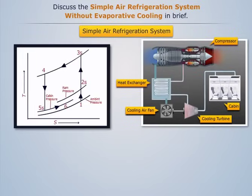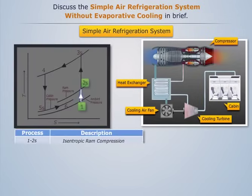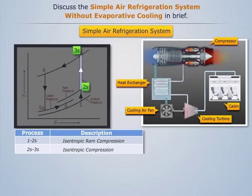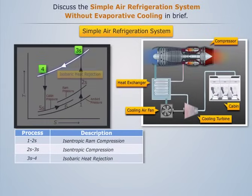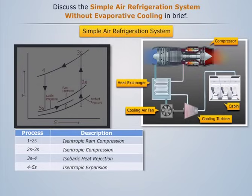The TS diagram can be given as follows. Process 1-2S represents the isentropic compression which takes place in the diffuser. Process 2-3S represents the isentropic compression which takes place in the main compressor. Process 3-4 represents the isobaric heat rejection which takes place in the heat exchanger.